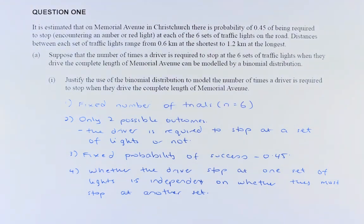Thirdly, the probability of success, I mean the probability of stopping at the red light is always going to be constant. It is 0.45. So that is the third reason why it is a binomial.